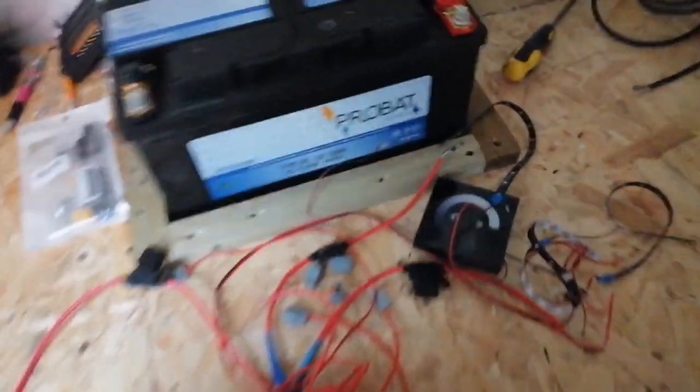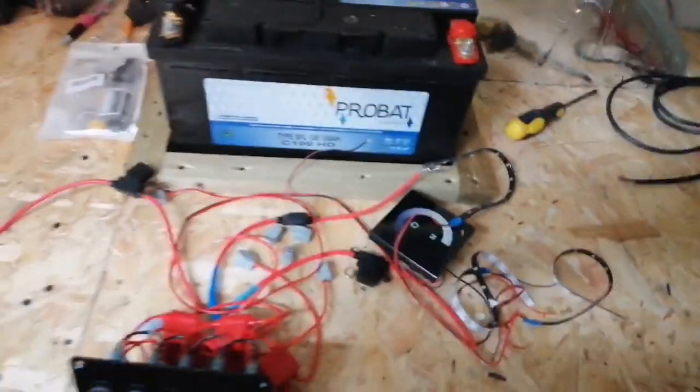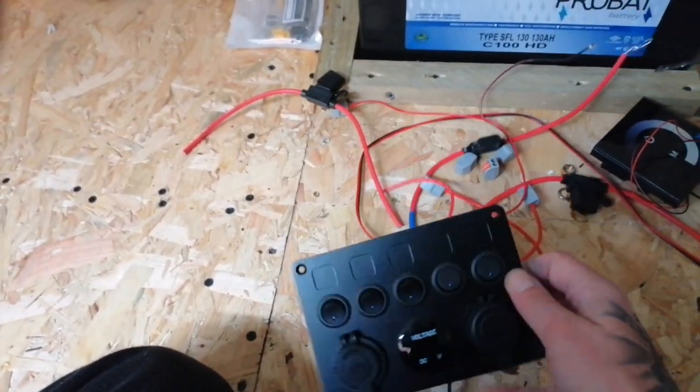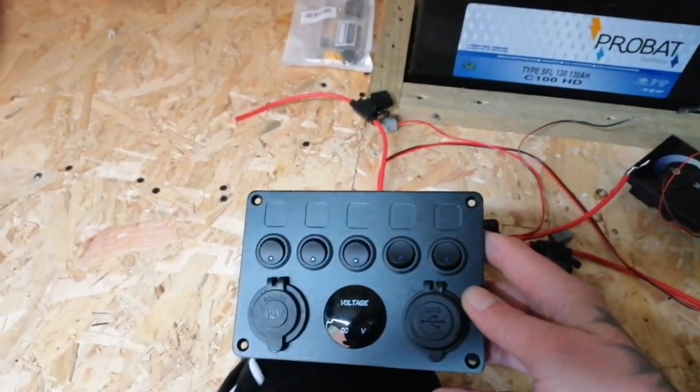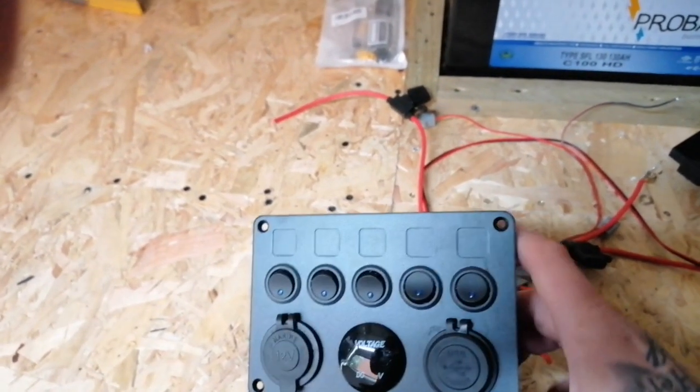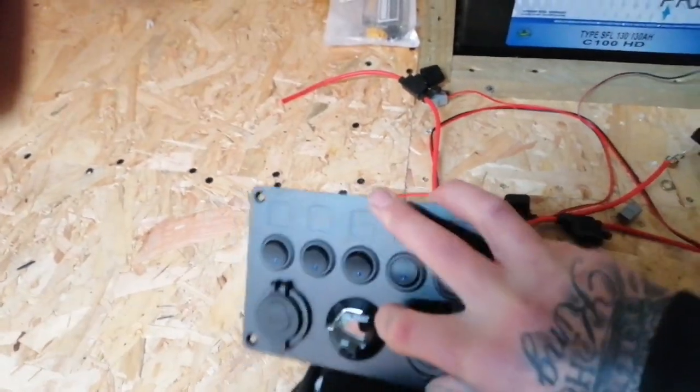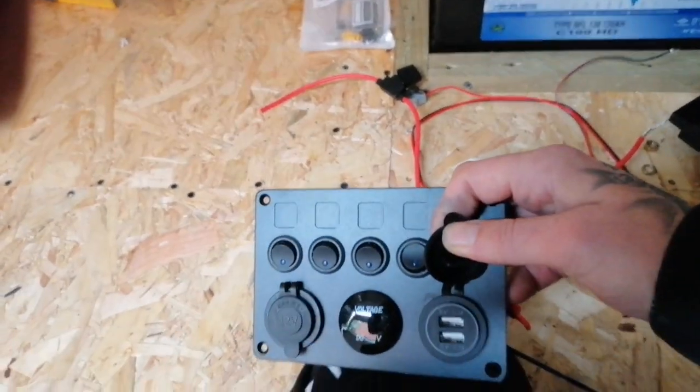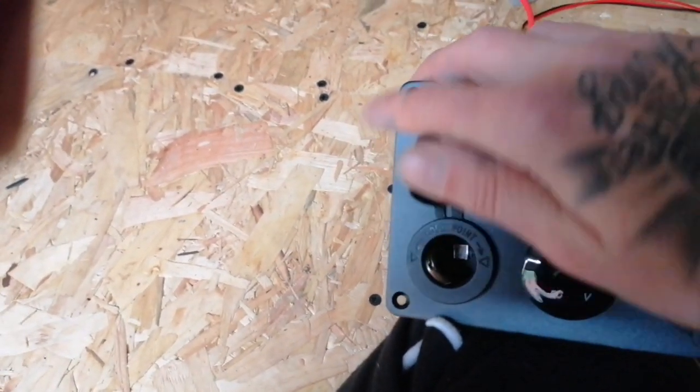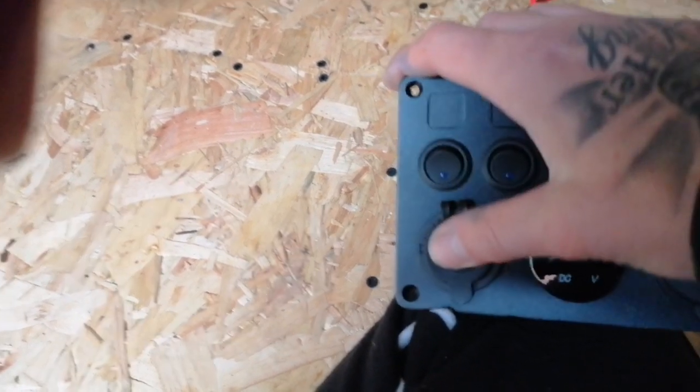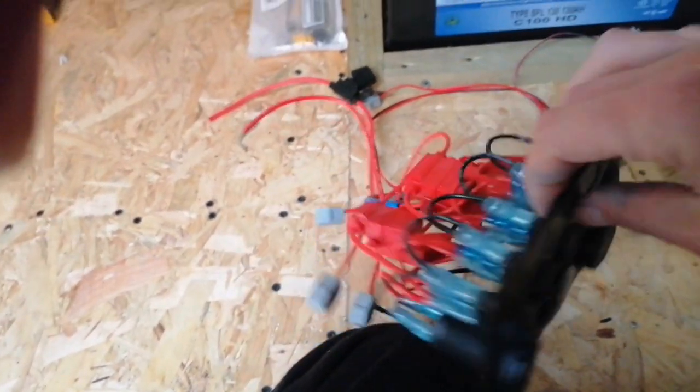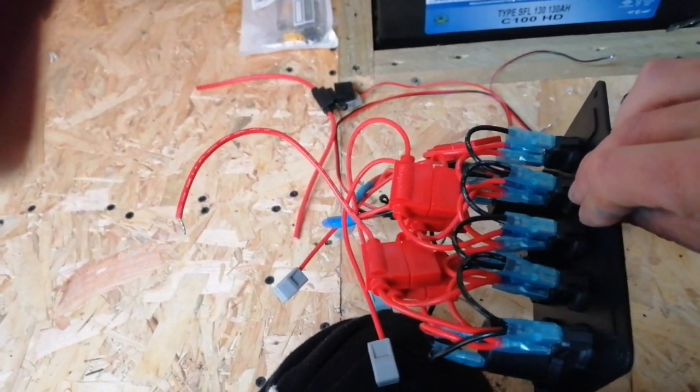Okay, so while it's raining outside, what I'm going to try and do now is just make sure that everything works. So basically I've gone for the 5-way gang fuse board which is on eBay for £16.99. In that you get the two USB ports, your voltmeter, and your 12-volt socket there. Obviously you've got your 5 switches as well. Then on the back of that you've got all the inline fuses for it.